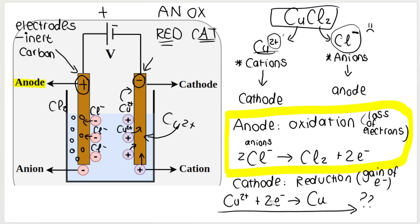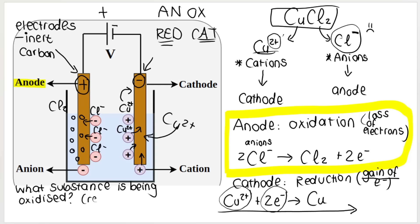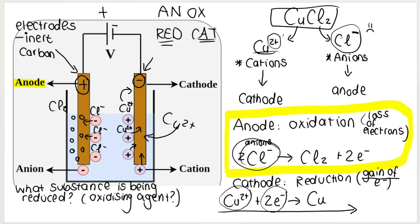You can see that reduction is the gain of electrons because the copper 2-plus ions gain those electrons. If they ask what substance is being oxidized — or what is the reducing agent — the answer is Cl-minus, because it's the Cl-minus that is losing electrons. And if they ask what substance is being reduced — otherwise known as the oxidizing agent — that is the copper 2-plus, because it is gaining the electrons.